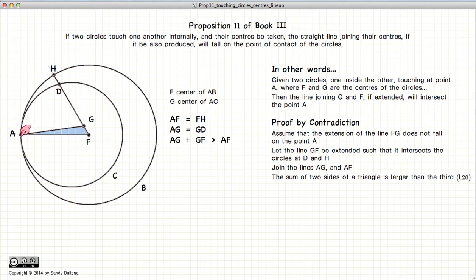Looking at this little triangle AGF, the sum of two sides of the triangle is always larger than the third, according to Proposition 20 of Book 1. So AG plus GF is greater than AF.